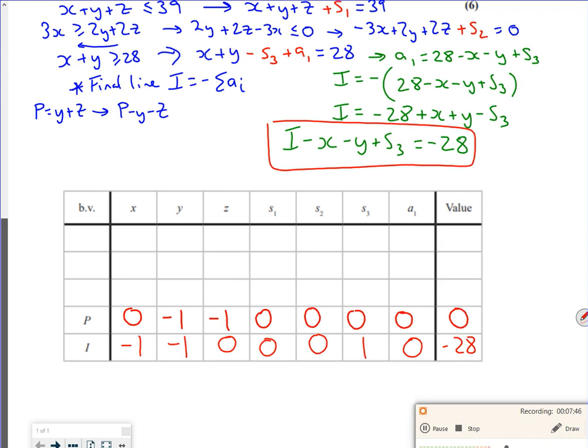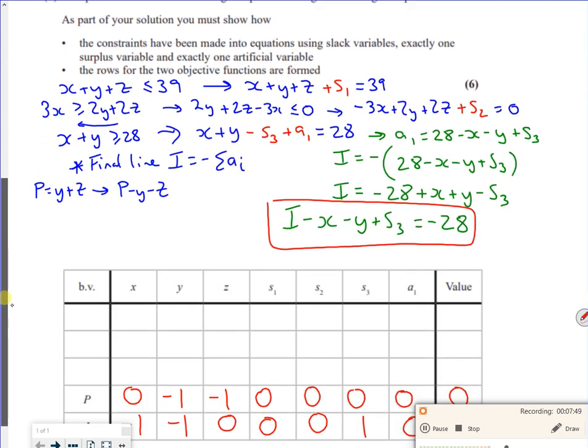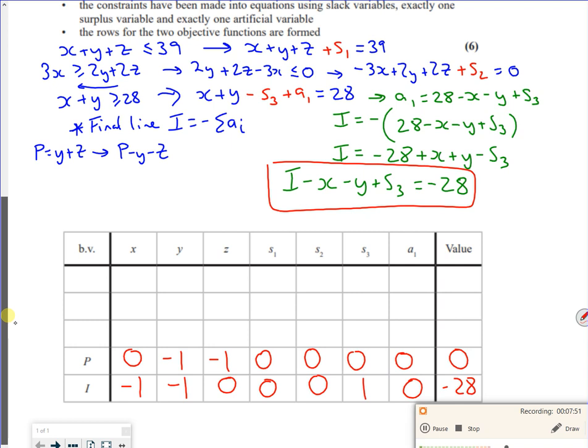Then I have the other constraint. For this one, 1X, 1Y, 1Z, 1 s1. So I'll stick my basic value up to s1: 0, 0, 0, 39.